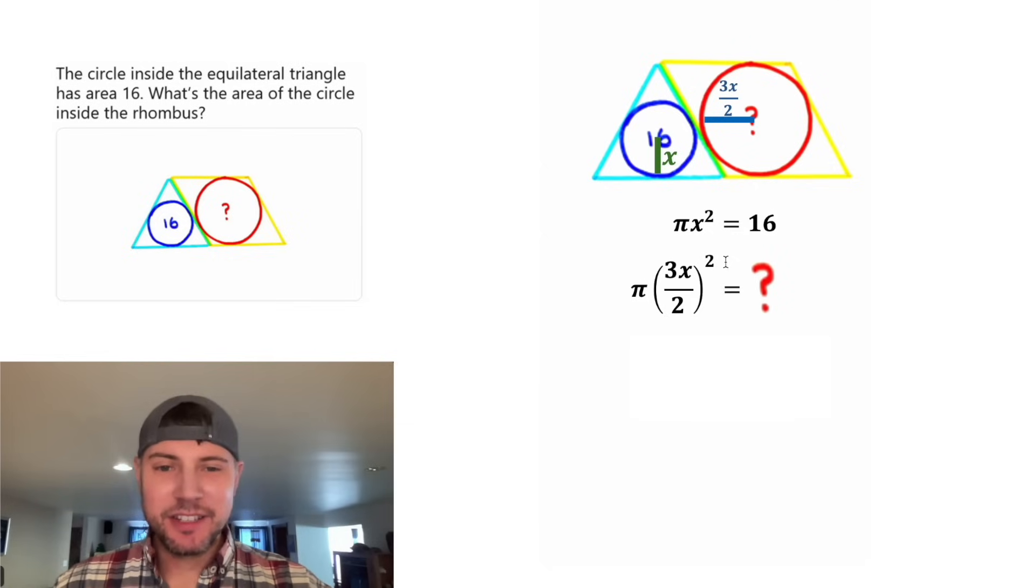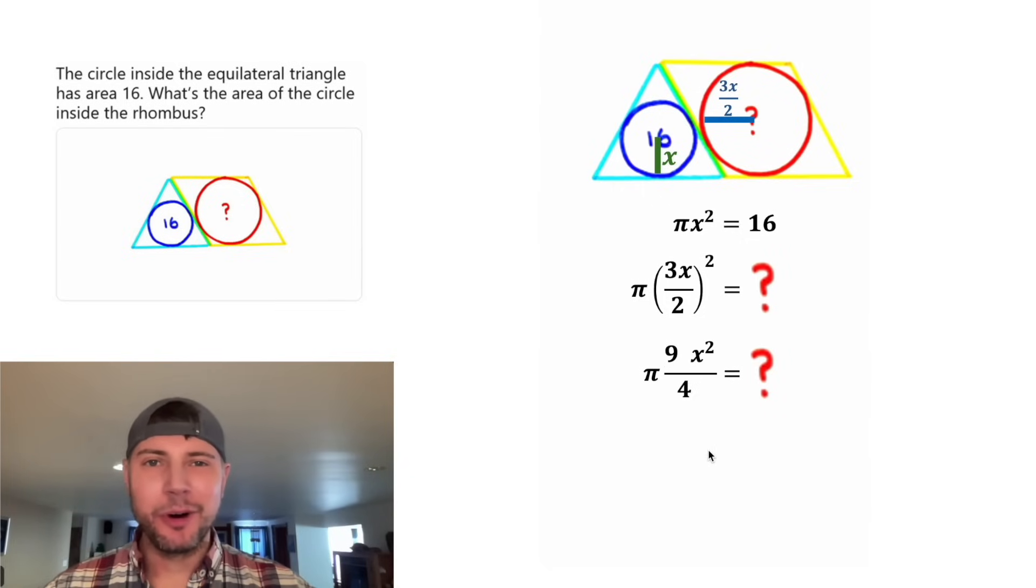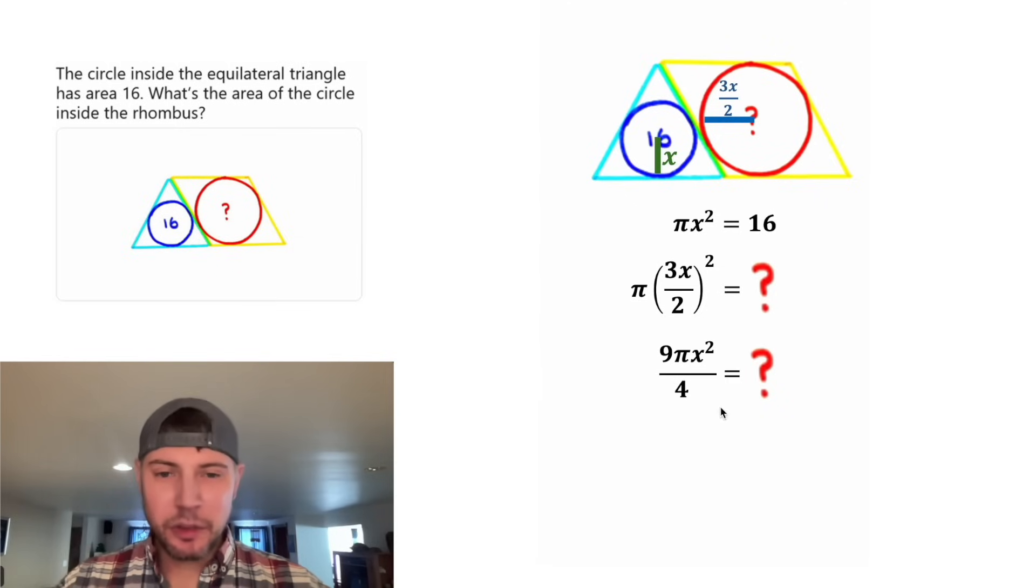Let's simplify this. This exponent will go to the 3, the x, and the 2. And then we can bring down the pi and the question mark. 3 squared is equal to 9, and 2 squared is equal to 4. And now let's rearrange things a little. Up here, we found that pi x squared was equal to 16.